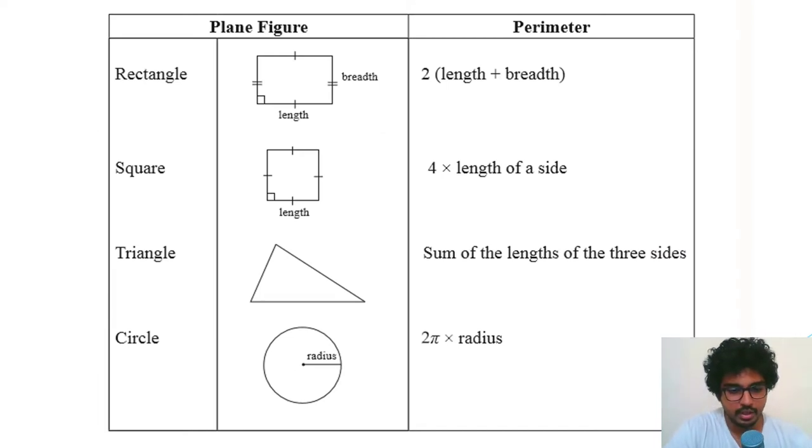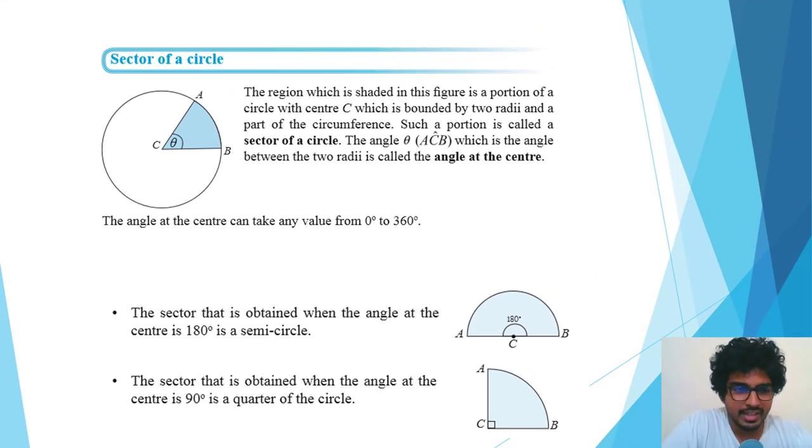If you had a confusion about radius, I'm going to quickly explain that. Radius is the length from the center of the circle to the circumference. Remember that.